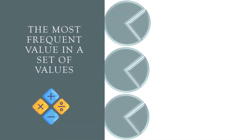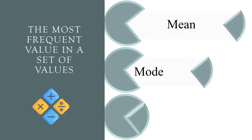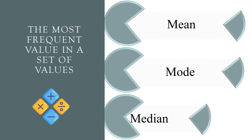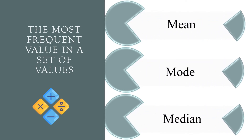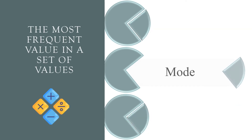The most frequent value in a set of values. Mean, mode, or median? The correct answer is mode.